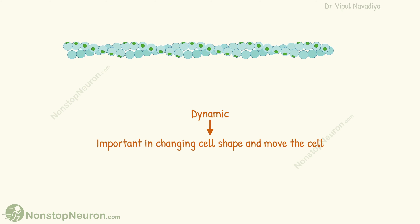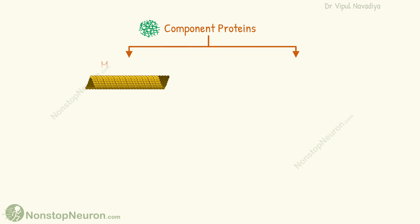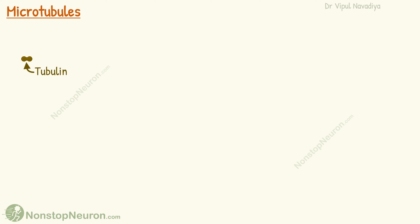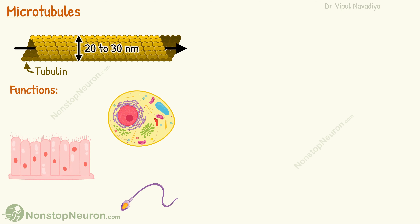Broadly, the component proteins of the cytoskeleton are of two types: microtubules and filaments. Microtubules are polymers of tubulin. They polymerize in such a fashion that leaves a hollow space at the center, so microtubules have an empty lumen. Their diameter is 20 to 30 nanometers. Talking about their special roles, they are involved in forming structures like cilia, flagella, centrioles, etc., and in their movement.